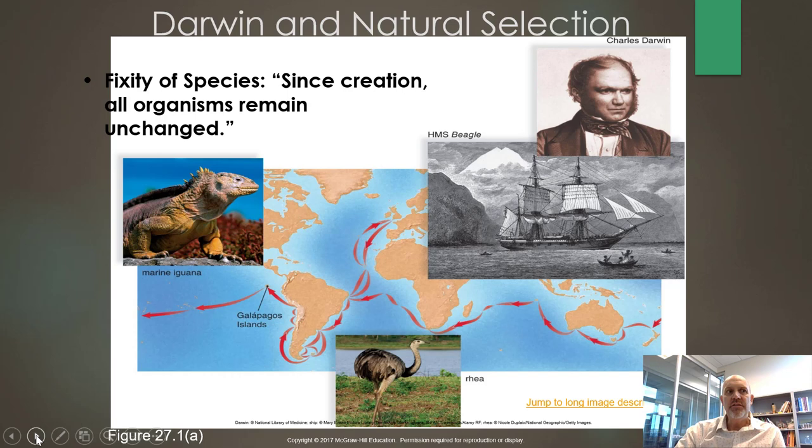Darwin realized these finches had changed as they flew from the mainland to one island and then the next. Over time, features — especially their beaks — changed. He realized these species were not specially created but actually evolved, though they were still finches and still birds. His mechanism was natural selection, which is true, as we've just described with the peppered moth.